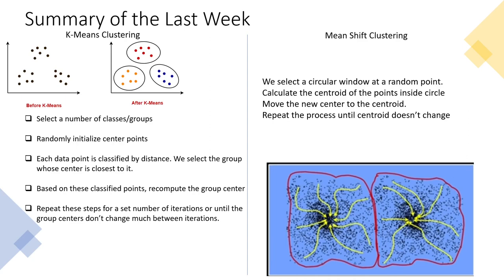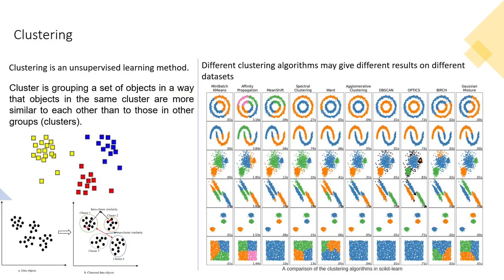The most commonly used clustering techniques are k-means and mean-shift clustering. Clustering is an unsupervised learning method that groups a set of objects so that objects in the same cluster are more similar to each other than to those in other groups — you are creating groups automatically by getting clues from the data, and things in the same cluster are similar.